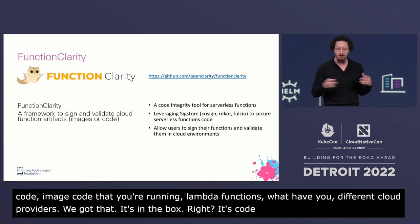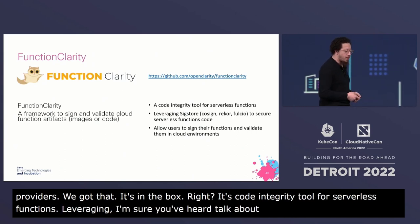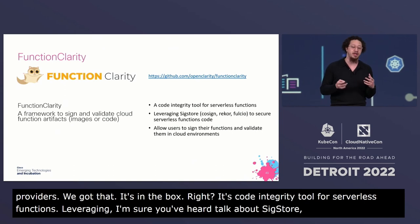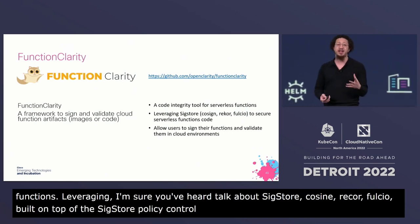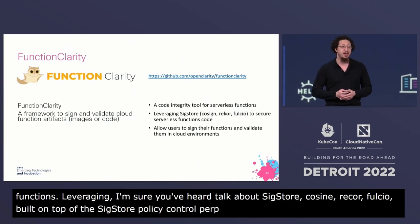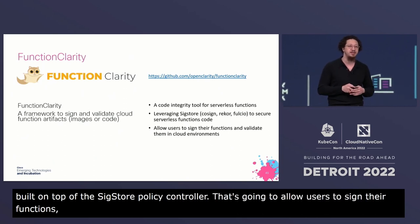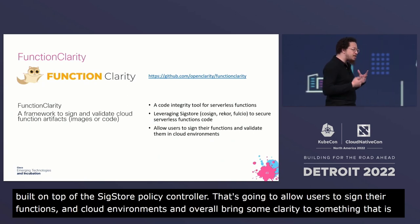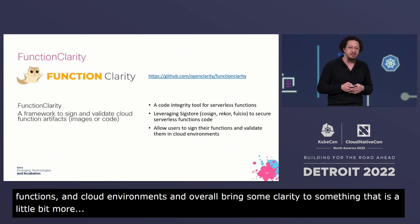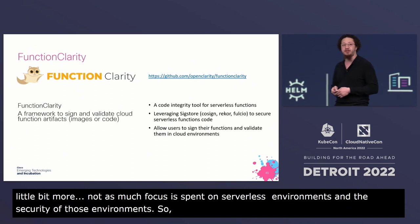Leveraging — I'm sure you've heard talk about SigStore, Cosign, Rekor, Fulcio — built on top of the SigStore policy controller. This is going to allow users to sign their functions, validate them in cloud environments, and overall just bring some clarity to serverless environments and the security of those environments. That's what FunctionClarity is here to do.